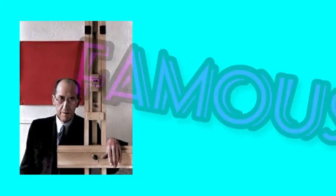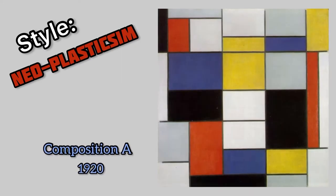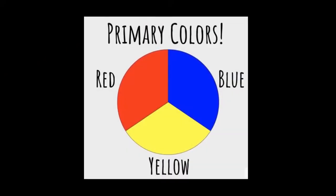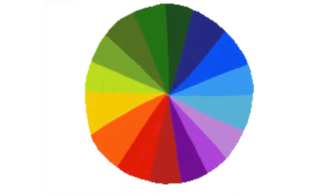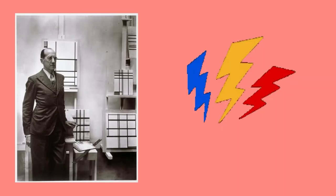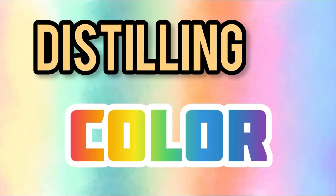He's famous for a style of painting called neoplasticism, which uses bold intersecting black lines filled in with primary colors. Primary colors — red, yellow, blue — are the building blocks for all other colors. By using primary colors, Mondrian felt that he was distilling color down to its most basic essence.